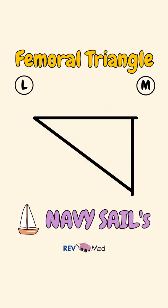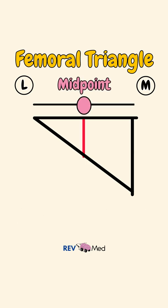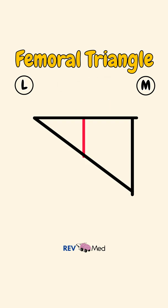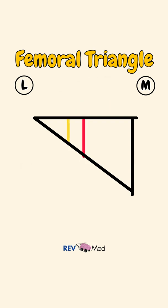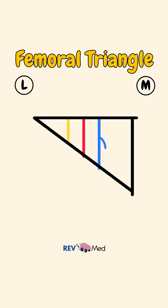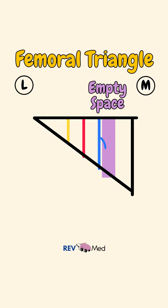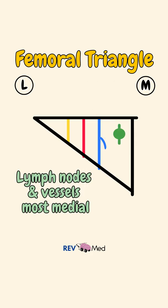Try to remember that the navy sails. Now for the contents: in the midpoint, we'll draw down an artery in red. Lateral to it, we have a nerve in classic yellow. And medial to the artery, we have a vein in blue, along with its tributary. Medial to the vein, we'll have an empty space. And finally, most medial, we'll draw in our lymph nodes and vessels in green.